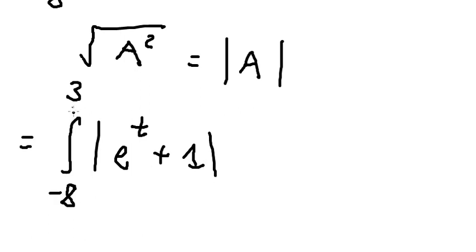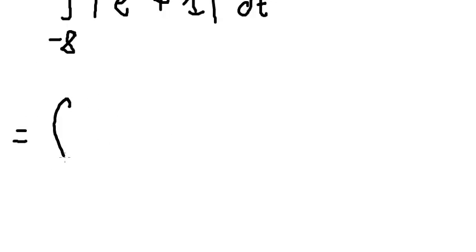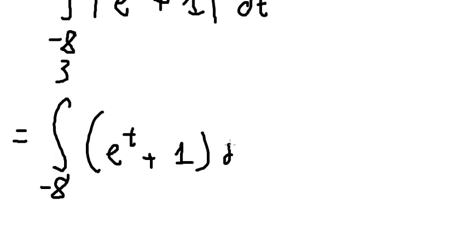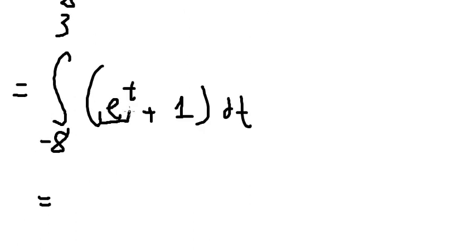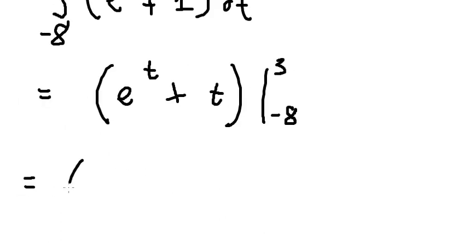From negative 8 to positive 3, when we put this one here, it's still a positive number. So we can cancel the absolute value. The integration of this one, that is e to the power of t plus t. And we put the bounds from negative 8 to positive 3, and now we have the final answer.